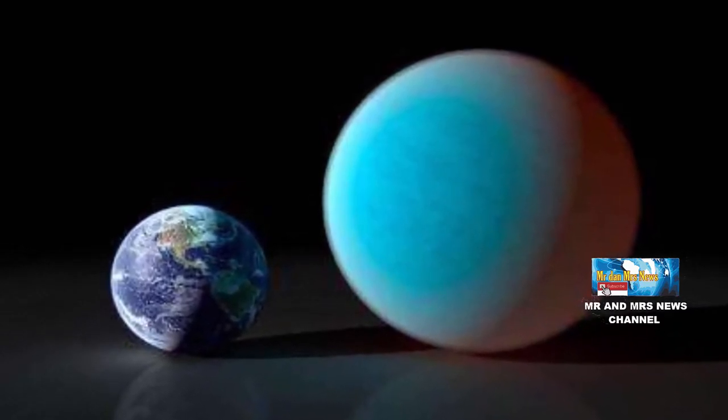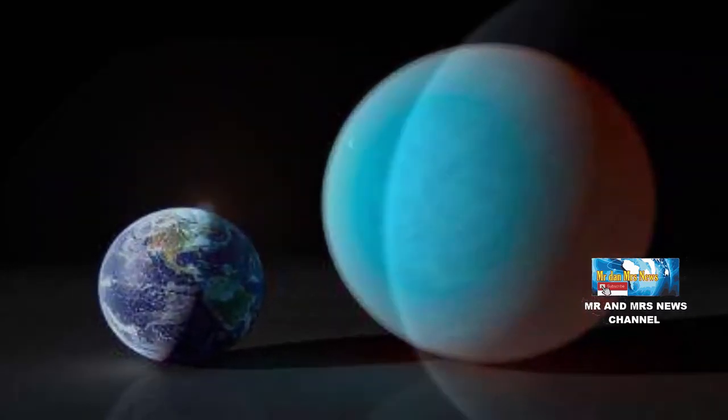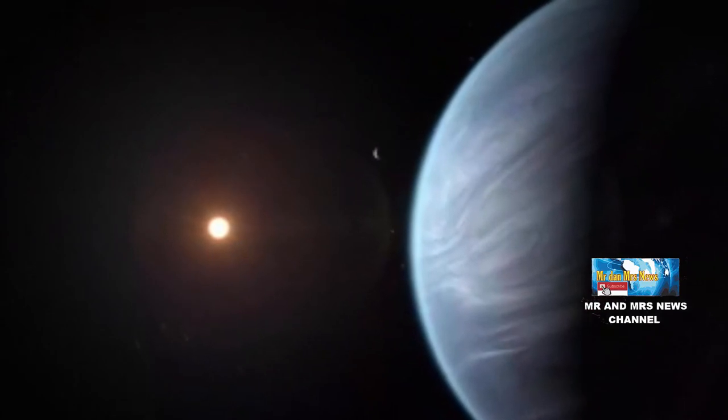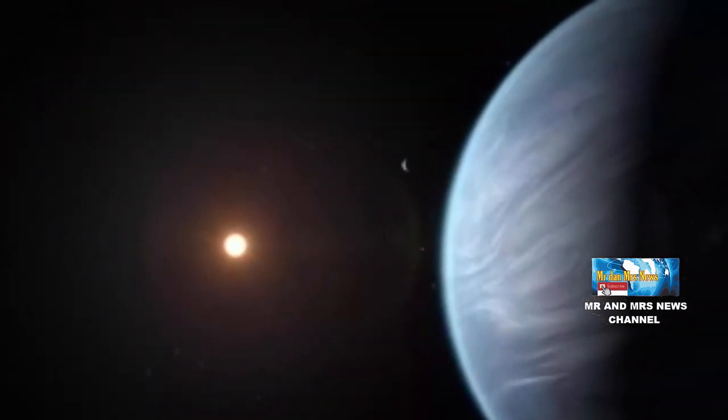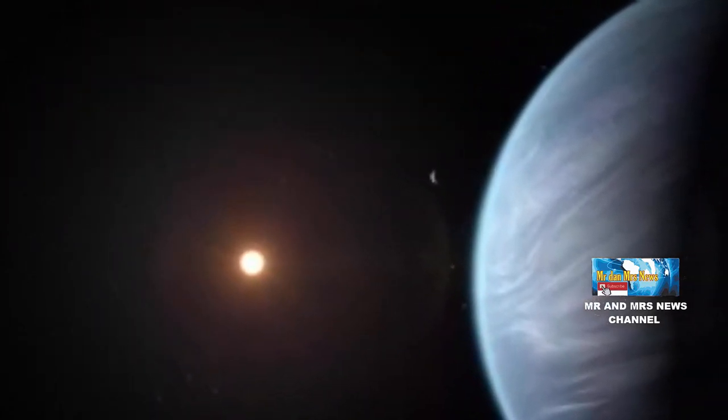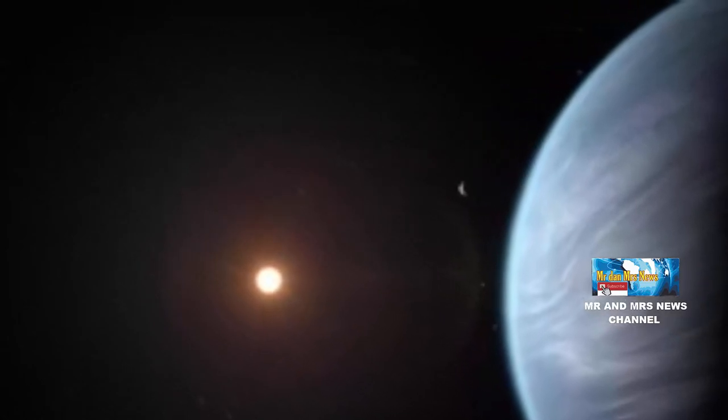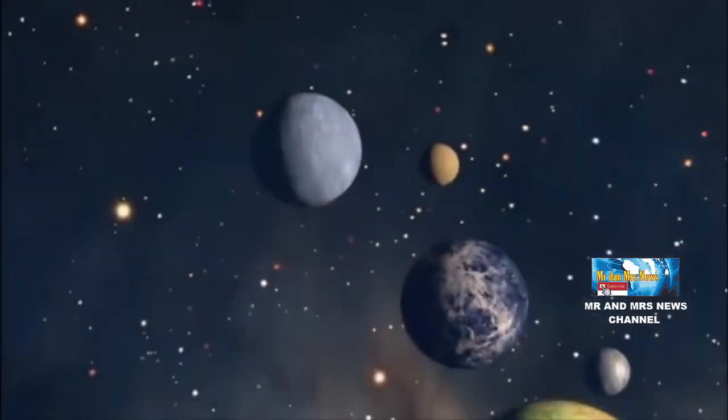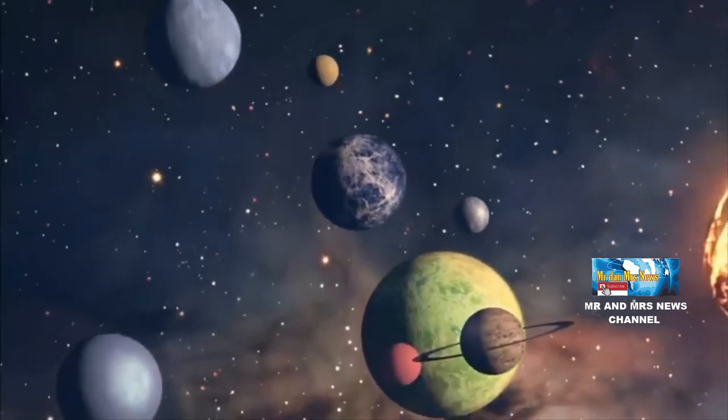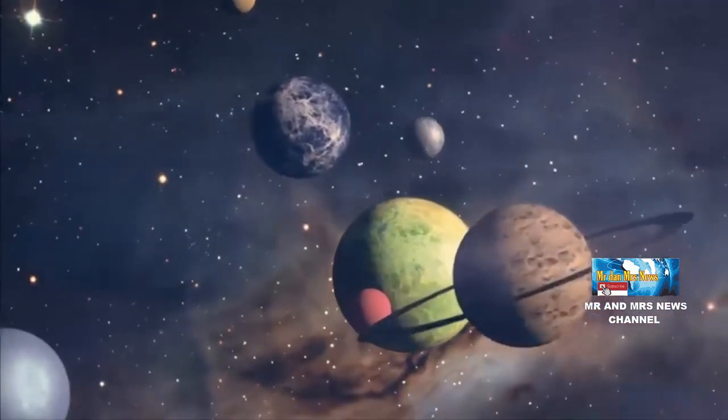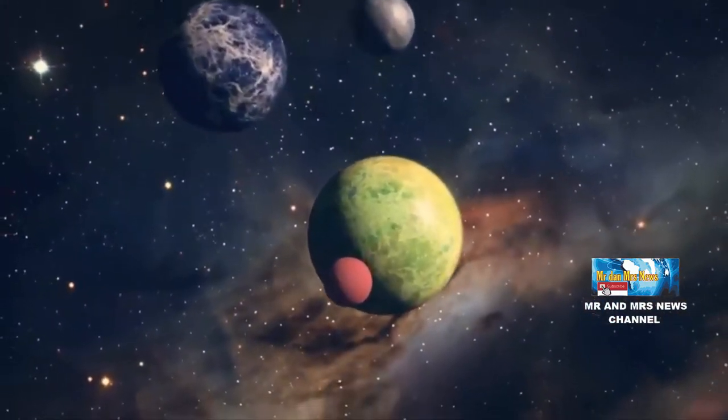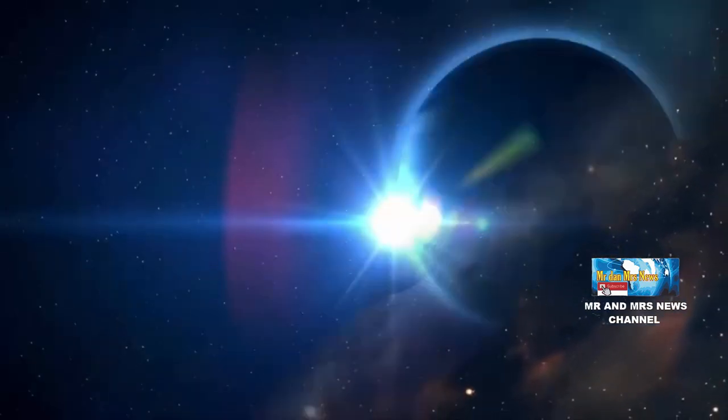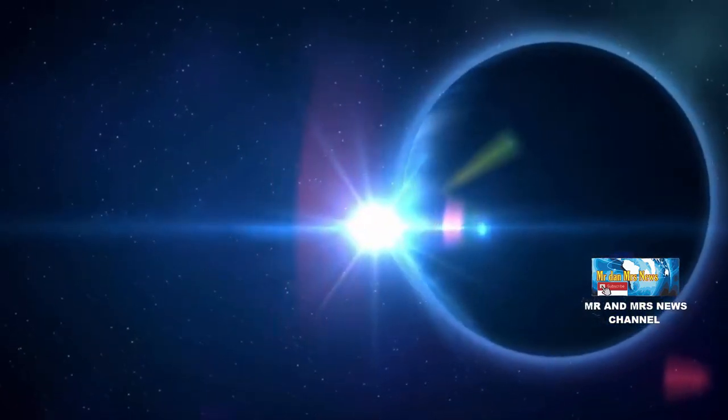Madhusudhan mengatakan, ukuran kecil planet mirip bumi relatif memunculkan tanda-tanda atmosfer yang lemah, sehingga sulit untuk mendeteksi tanda-tanda kehidupan. Namun, Hycean bisa lebih dari 2 kali radius bumi untuk sebuah planet sekitar 10 kali masa dan secara signifikan lebih panas, dengan suhu atmosfer rata-rata mencapai hampir 200 Celcius.